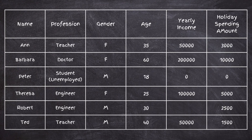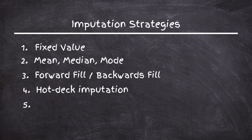You can also use hot deck imputation, where you find a record with similar characteristics to the one with a missing value and use that record's value. For example, if Robert is an engineer around 30 years old with missing income, and Teresa is a 25-year-old engineer making $100,000, we can fill in Robert's income with $100,000 since those records are fairly similar.